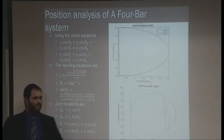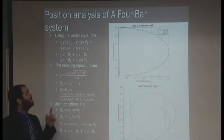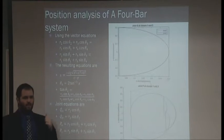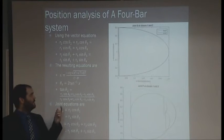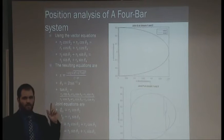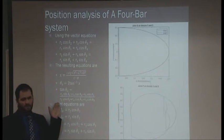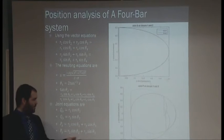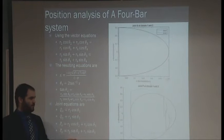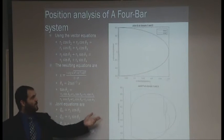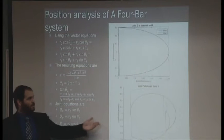As you see here, the positional analysis was done by using the vector equations, solving these vector equations for the output values theta 3 and theta 4, while theta 1 remains constant. The resulting equations from the vector equations are the ones you see here in the middle. These vector equations gave us the output values. With these output values, we plug them into the bottom equations, which are the joint equations. These joint equations then would plot the X and Y components of every joint. Here on the side, as you see, are the joint P and joint Q through their motion at closure 1 and 2.